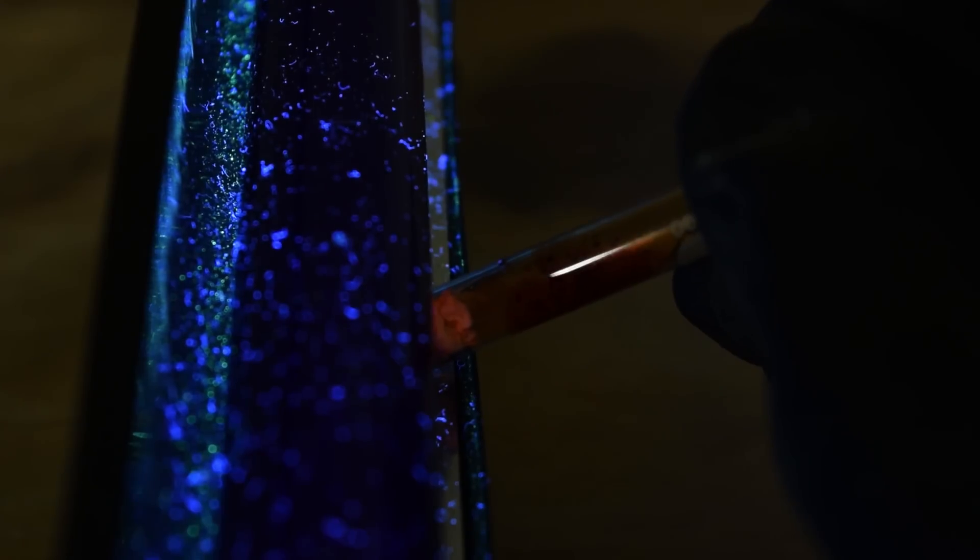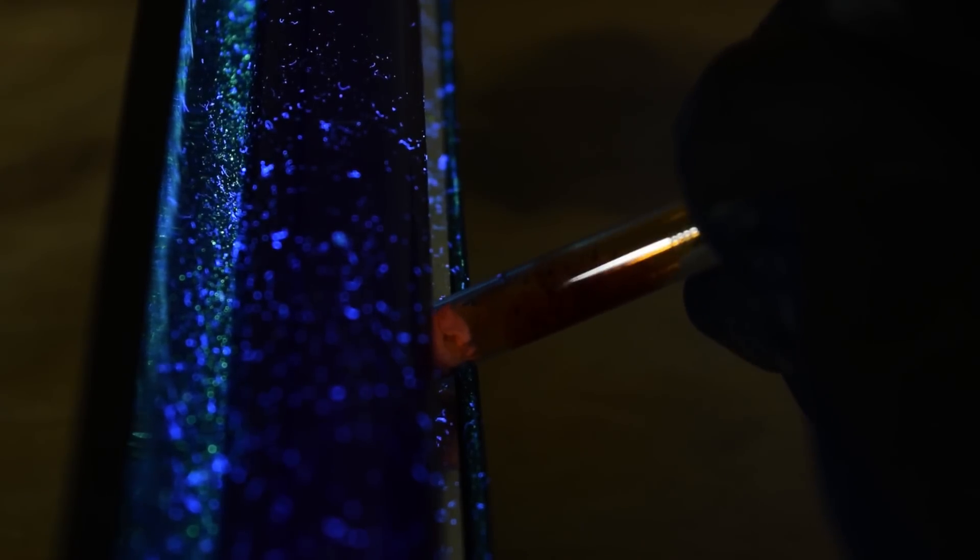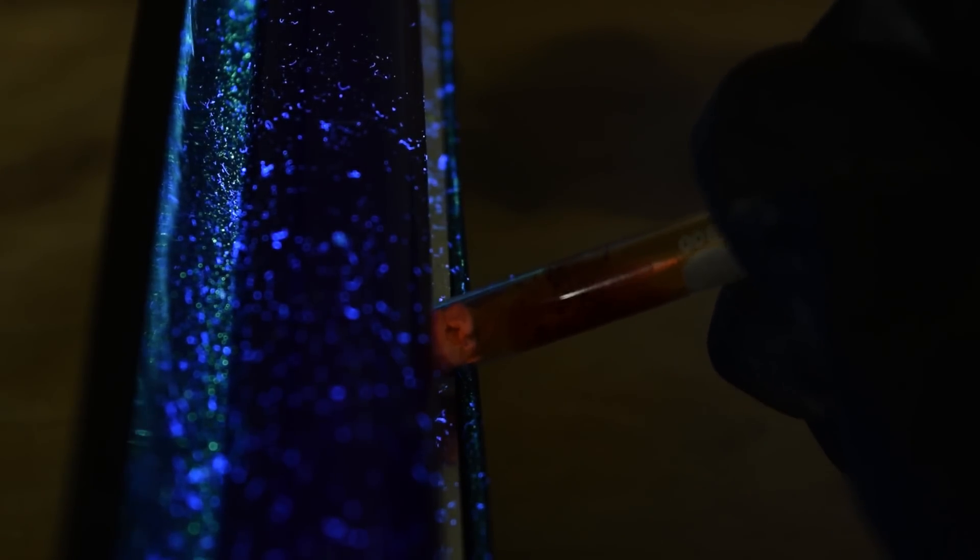The way that I can prove this is mercury-1-bromide is by putting it under a UV light. As you can see, it fluoresces this nice salmon color.